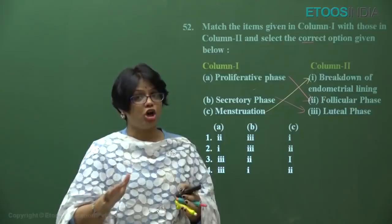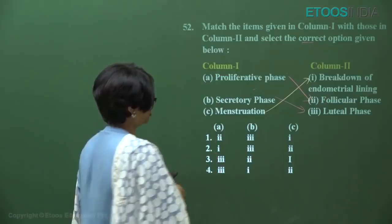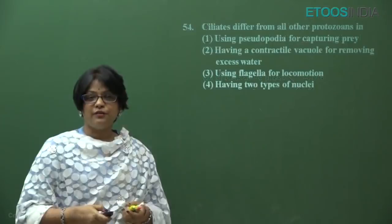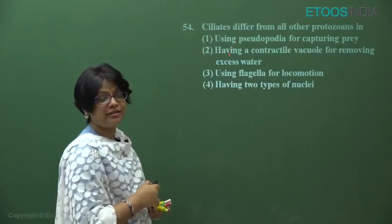Checking the matches: A is two — proliferative phase corresponds to follicular phase. B is three — secretory and luteal phases are the same. Menstruation is the breakdown of the endometrial lining when fertilization has not occurred. Answer confirmed.